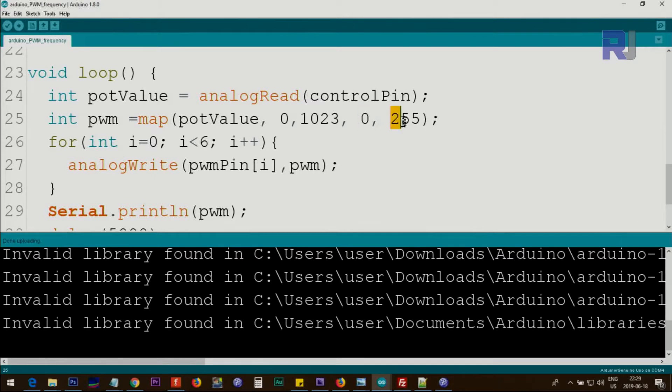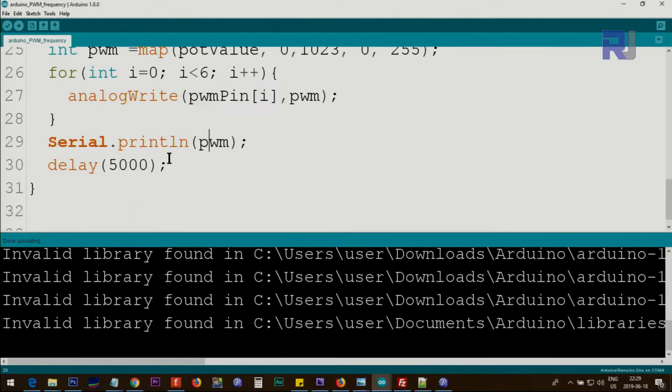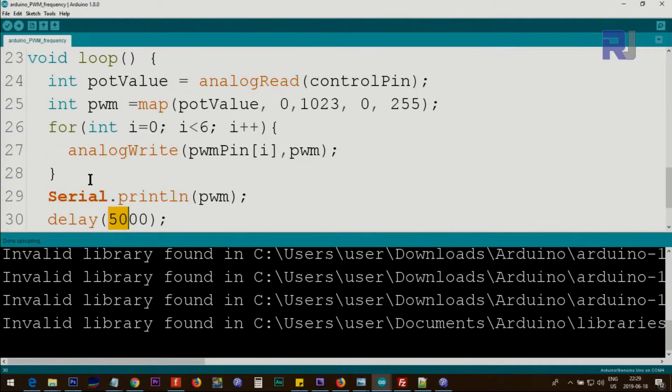Then we use a for loop again here to output this value to all pins with PWM modulation, and we print it on the serial monitor as well. Then we wait five seconds. The loop will continue doing the same thing.